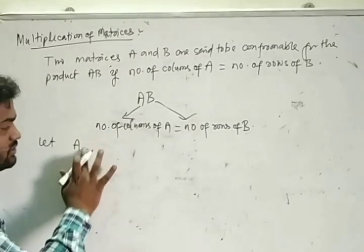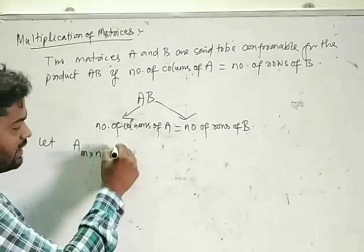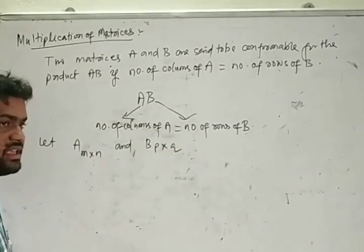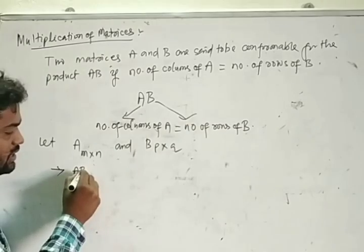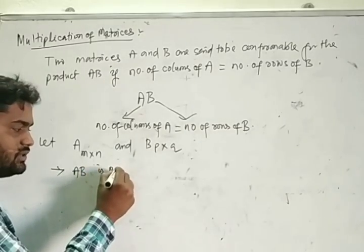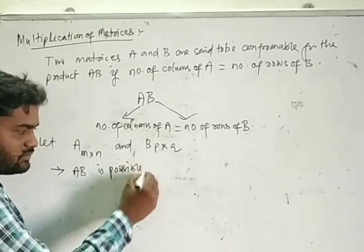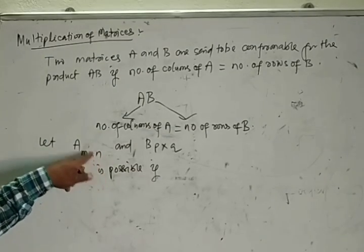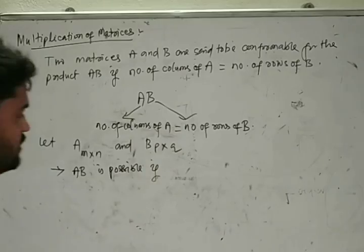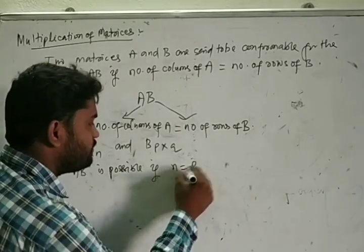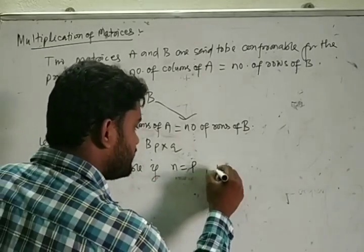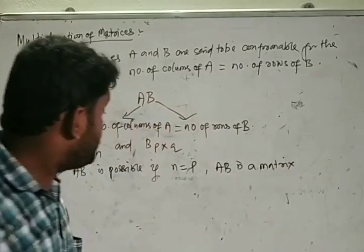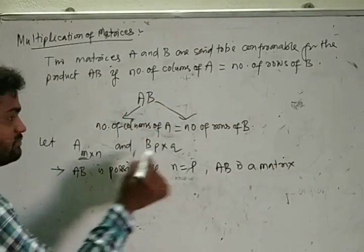Let A be a matrix of order m×n and B be a matrix of order p×q. Then the product AB is possible if n equals p — that is, if the number of columns of A equals the number of rows of B — and the product AB is a matrix of order m×q.